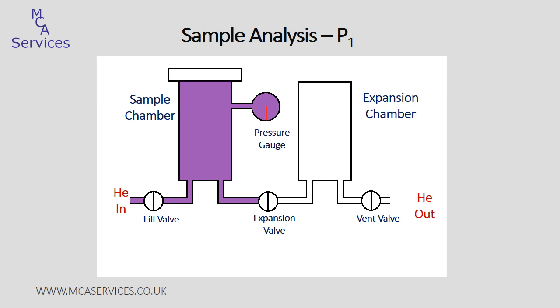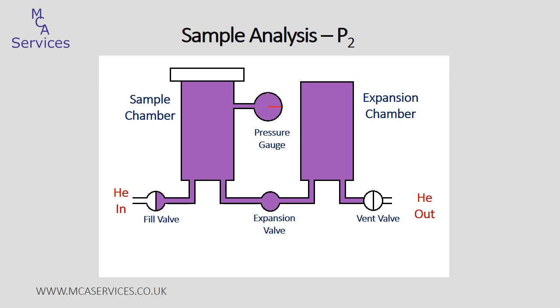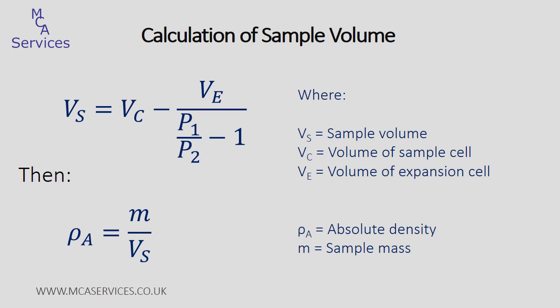The expansion valve is then opened and helium flows from the sample chamber through to the expansion chamber. Again, pressure is allowed time to equilibrate at the same rate, and the pressure recorded at this stage is used as P2. Our measured values of P1 and P2 are then applied to a rearrangement of the Boyle's law equation, where Ve is the precisely known volume of the expansion cell within the AccuPyc. The resulting sample displacement volume Vs is applied to the calculation of absolute density using the sample mass entered at the start of analysis.